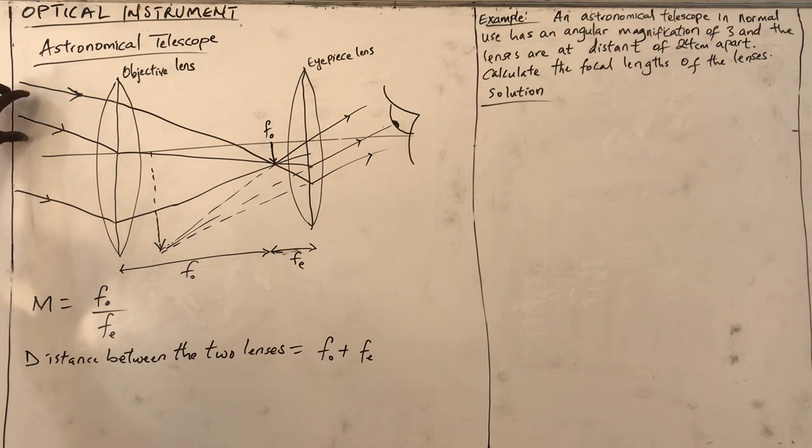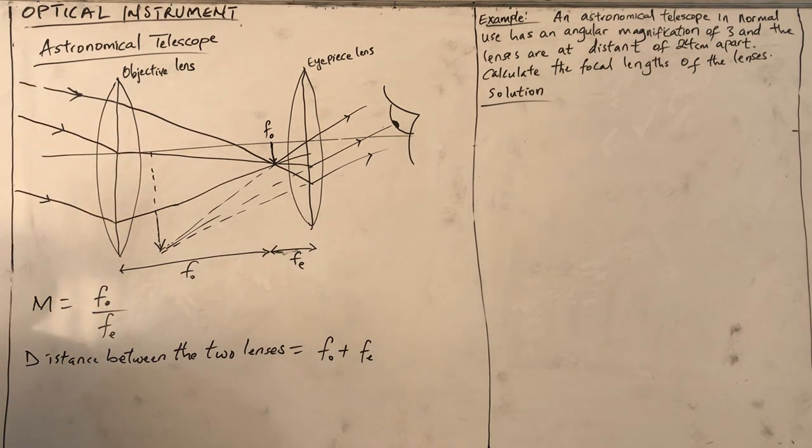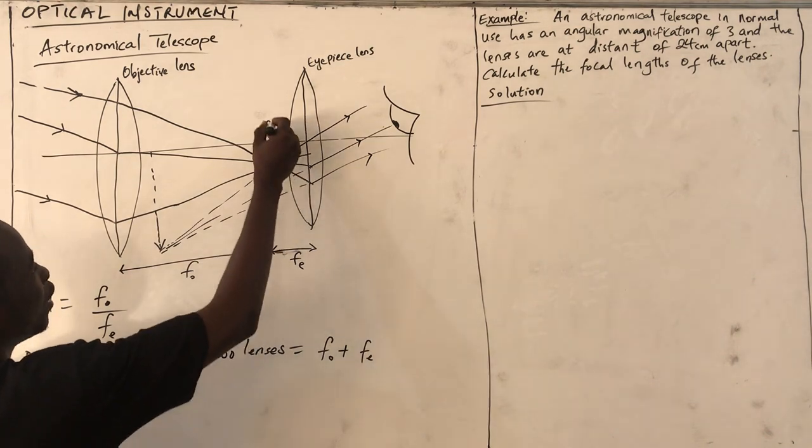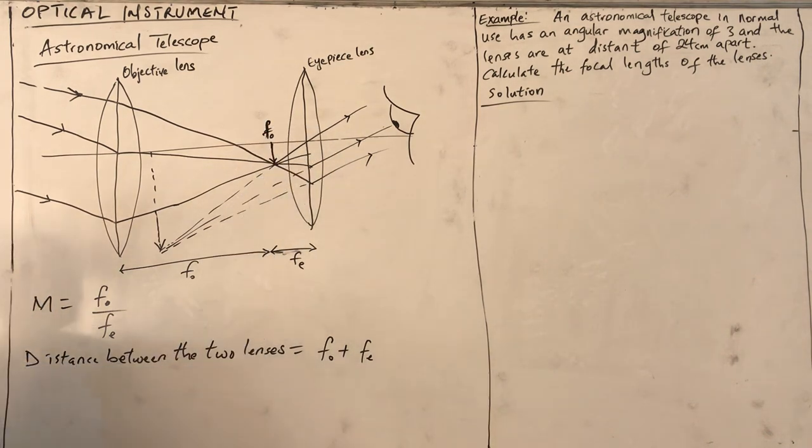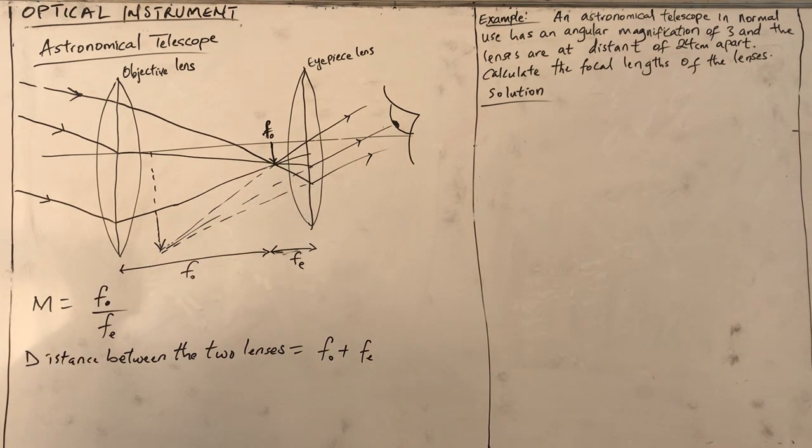The object is at a distance from infinity. These are rays of light coming from infinity. The image will be formed at the focal length of the objective lens. This is where the first image will be formed.